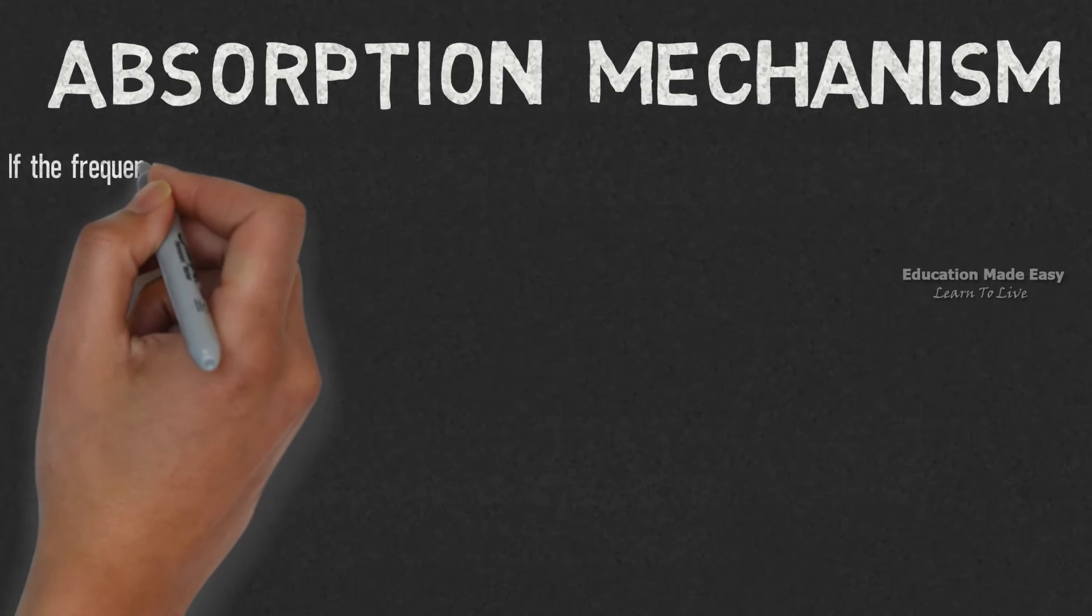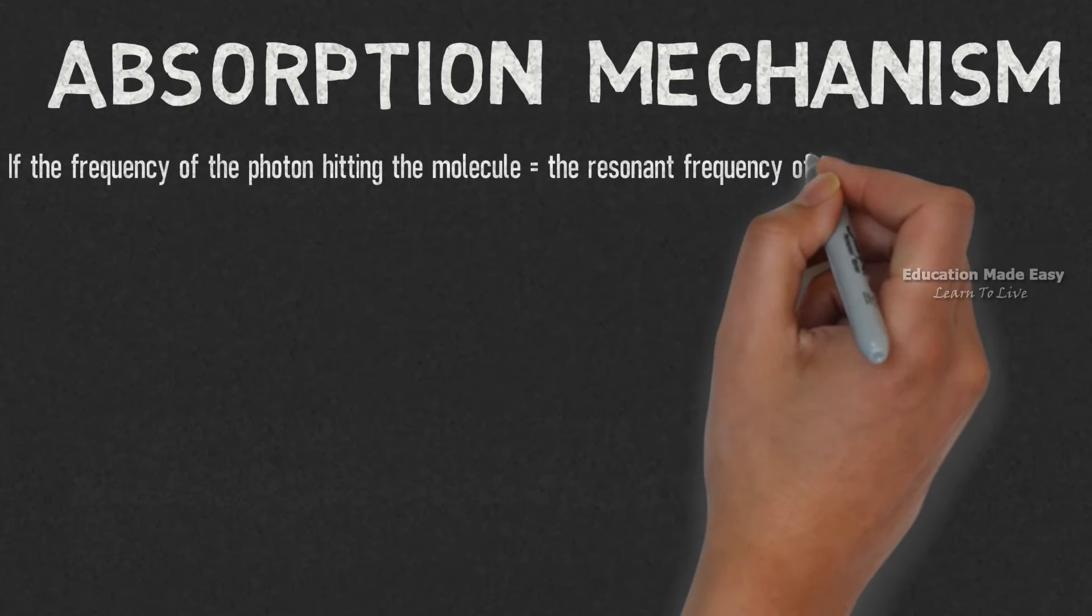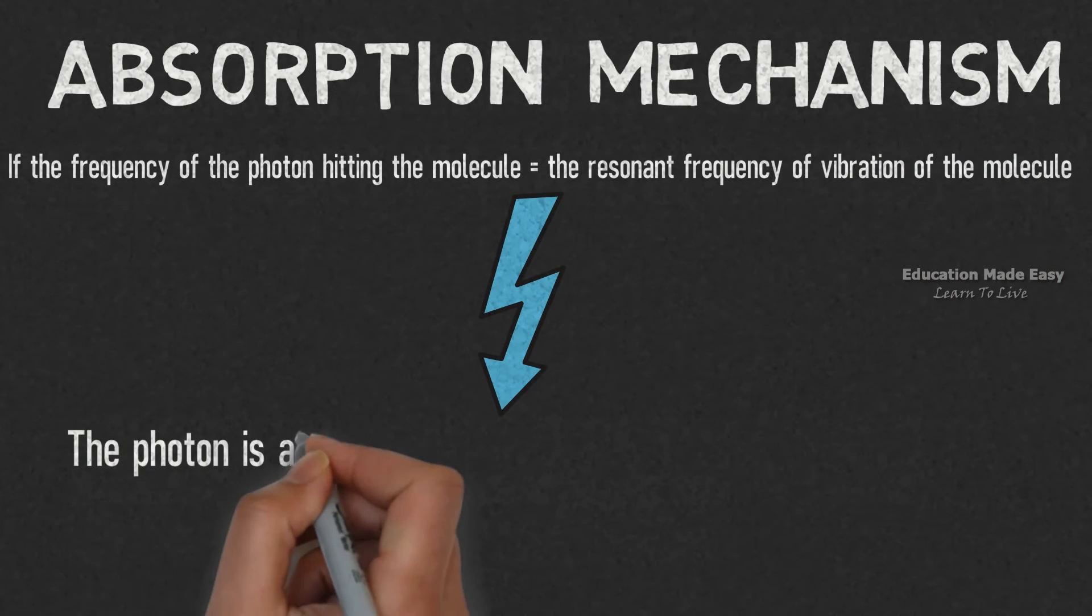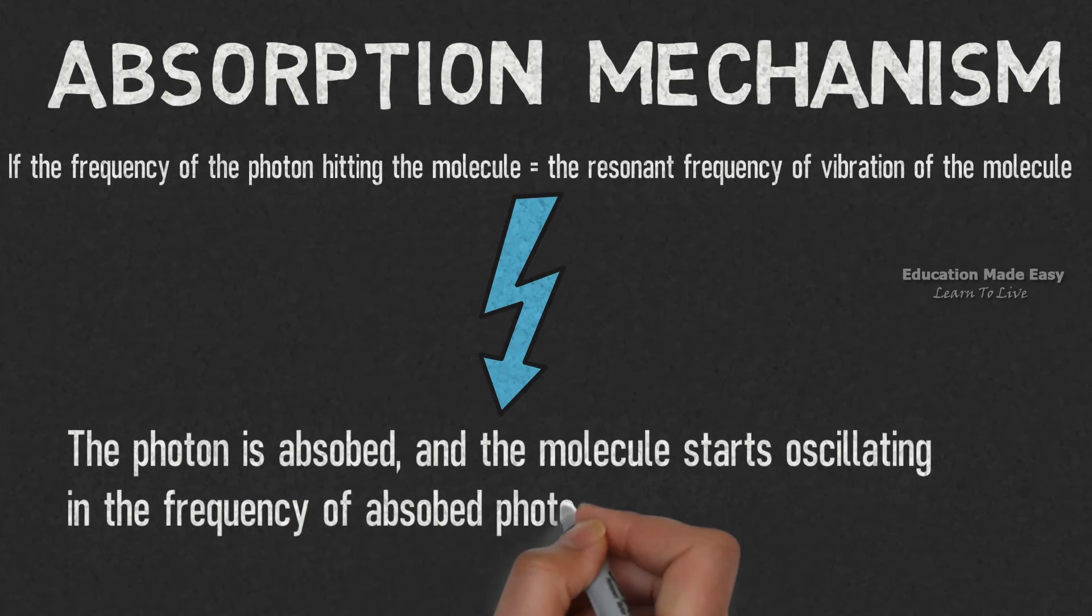If the frequency of the photon hitting the molecule becomes equal to the resonant frequency of vibration of the molecule, then the photon is absorbed and the molecule starts oscillating in the frequency of the absorbed photon radiation.